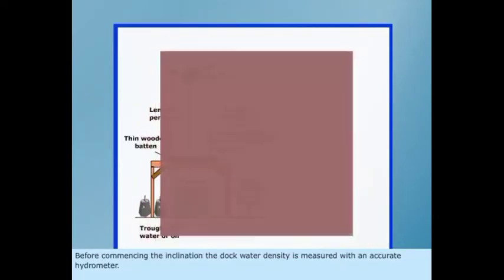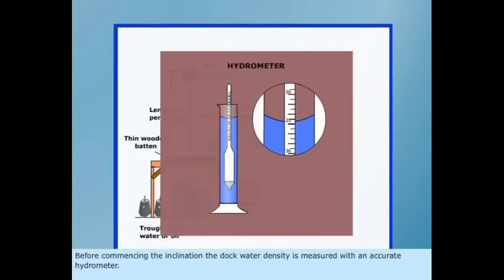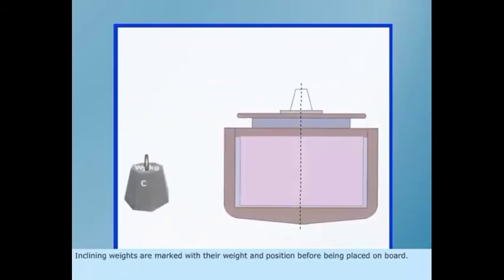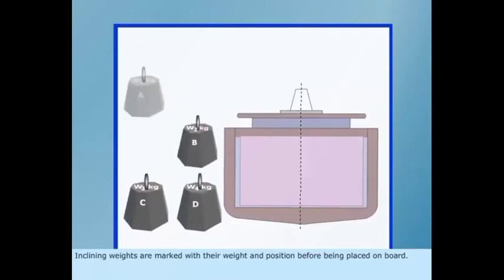Before commencing the inclination, the dock water density is measured with an accurate hydrometer. Inclining weights are marked with their weight and position before being placed on board.